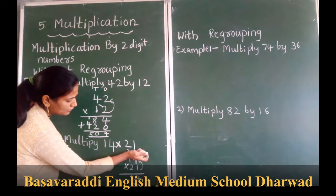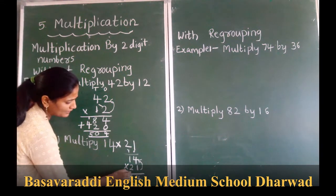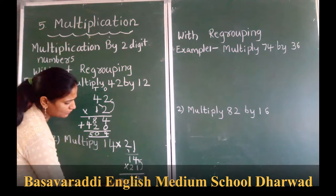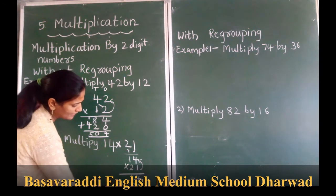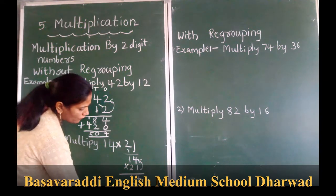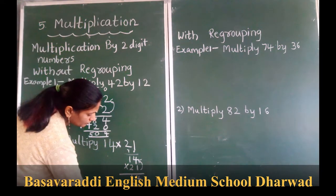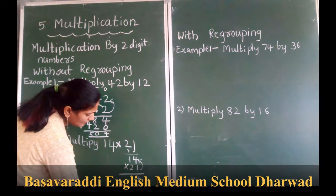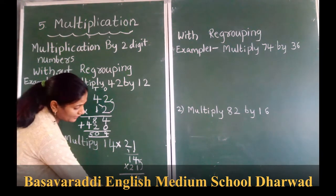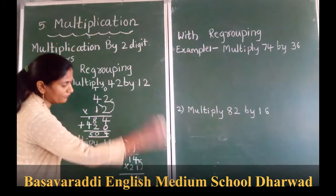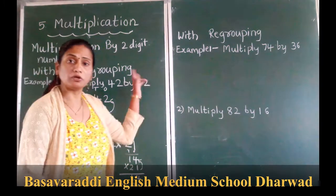The number is not carrying. 2 times 1 is 2. So we have to add: 4, 9, and 2. So the answer is 294. This is without any regrouping.